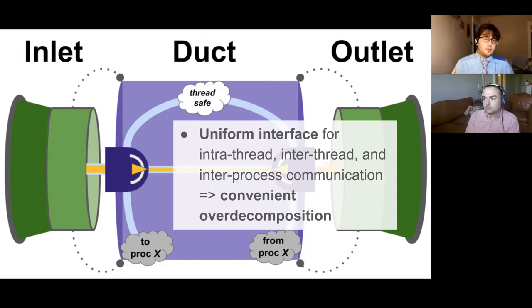There's different types of ducts. We have inter-thread, intra-thread, and inter-process communication. They can all be seamlessly replaced at compile time. This offers very convenient overdecomposition because it allows you to swap them out without having to actually worry about what's going on behind the scenes.